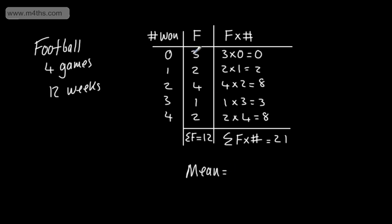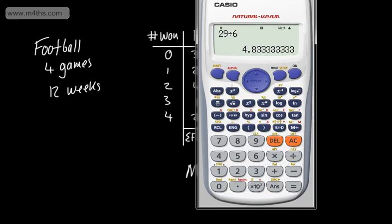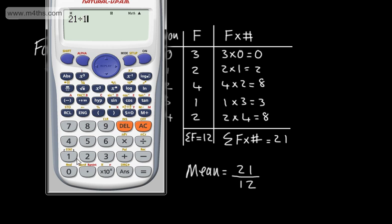Students sometimes just add up the values 0, 1, 2, 3, 4 and divide by 12, but we need the total number of games won. So 3 weeks × 0 = 0, 2 weeks × 1 = 2 games, 4 weeks × 2 = 8 more. The sum of the frequency is 12. We take the sum of frequency × x divided by the sum of frequency: 21 ÷ 12 = 7/4 = 1.75.